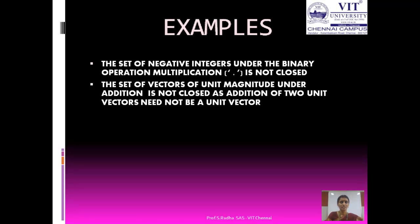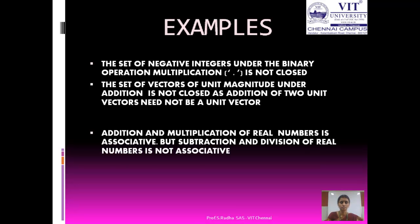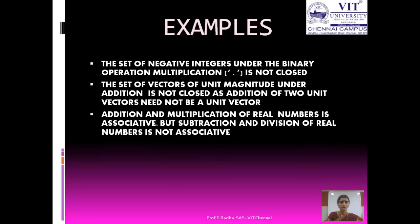The set of vectors of unit magnitude under addition is not closed — if you add two unit vectors, the resultant vector may not be a unit vector. Addition and multiplication of real numbers is associative, but subtraction and division of real numbers is not associative.